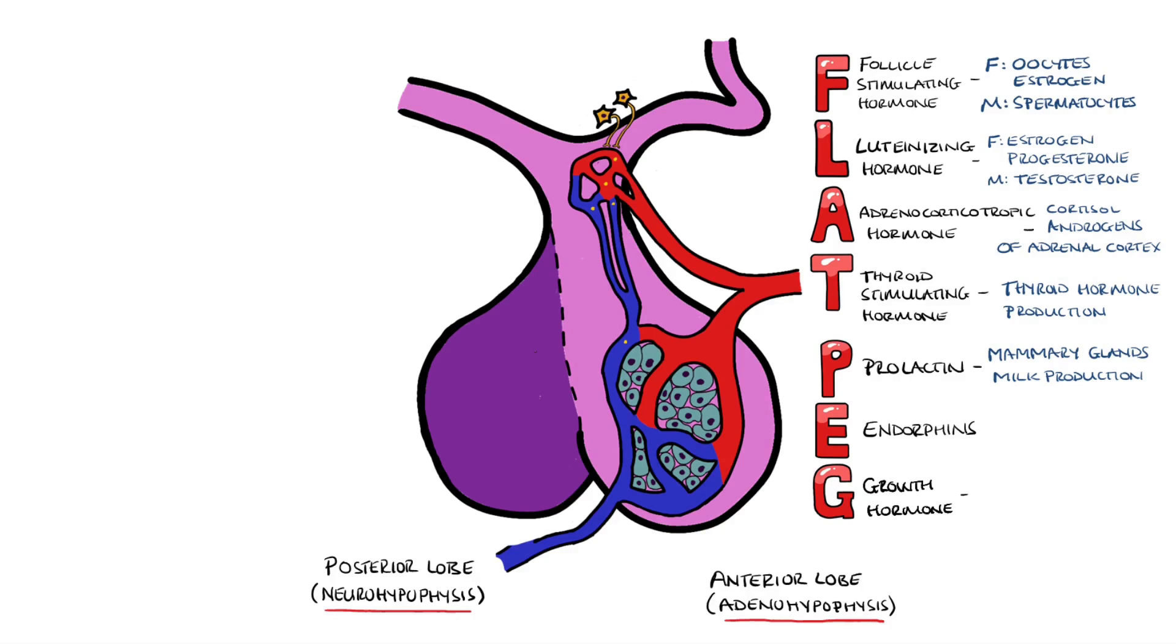E stands for endorphins, and G stands for growth hormone, which is responsible for causing growth in children and maintaining bones, as well as other tissues in adults.